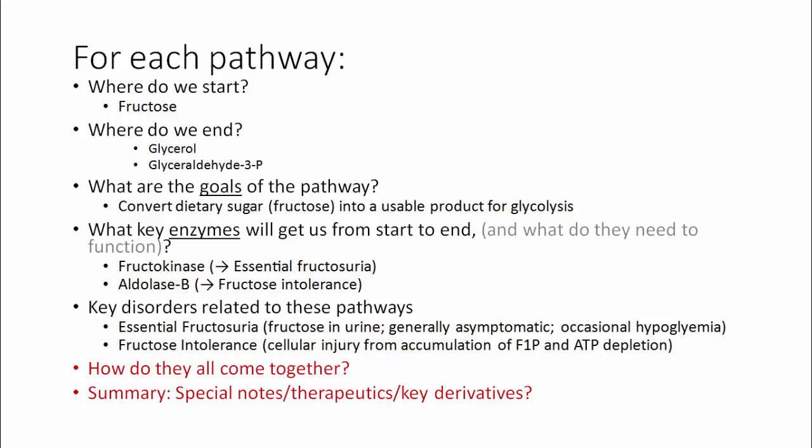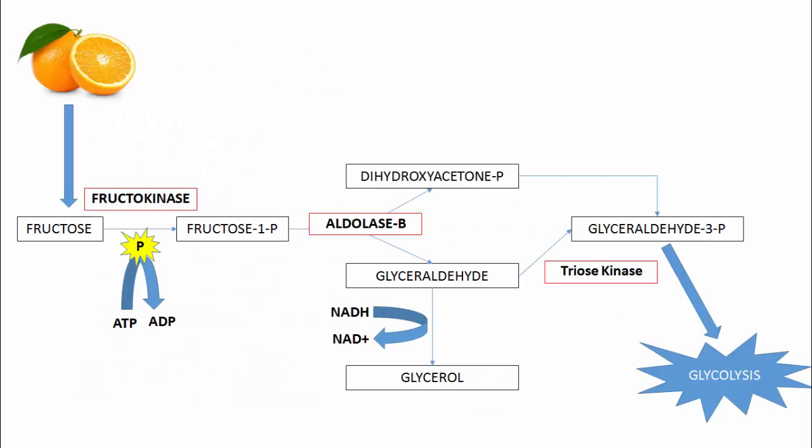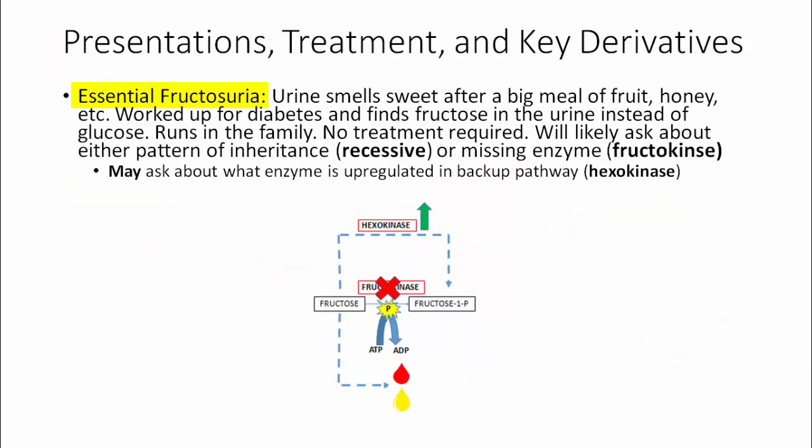Now that we've covered most of our key pathway elements, we'll focus on how these disorders come together, how they're treated, and how they'll likely show up as questions. Essential fructosuria will usually appear in a question stem when a child has urine that smells sweet after a big meal of fruit, honey, or anything containing a lot of fructose. They'll usually be worked up for diabetes but will show high fructose in the urine rather than glucose on urinalysis. This tends to run in the family and skip generations because it is recessive. Typically no treatment is required. A question will usually ask about the pattern of inheritance (recessive), the missing enzyme (fructokinase), or the upregulated backup enzyme (hexokinase).